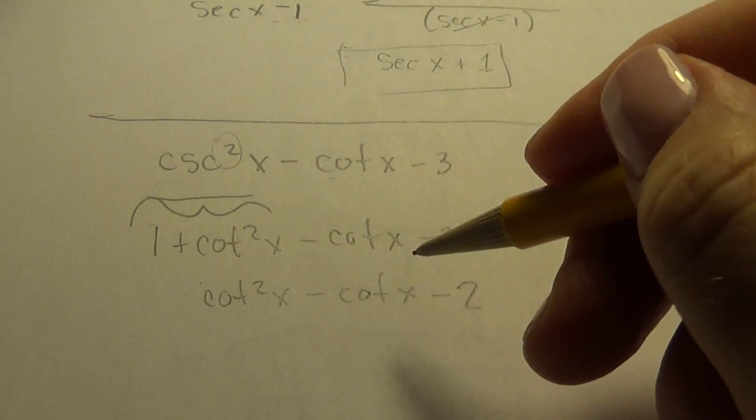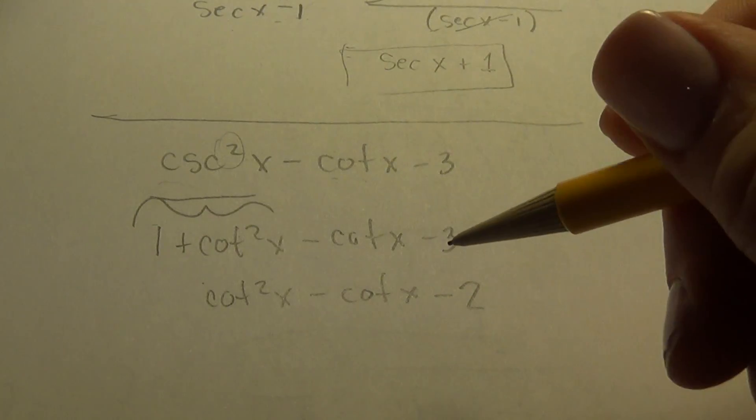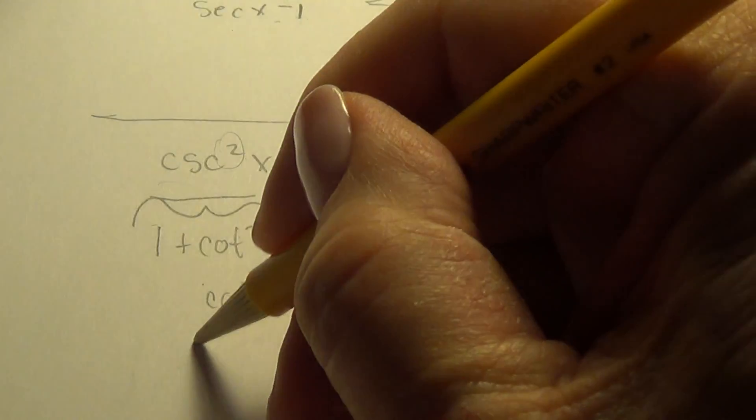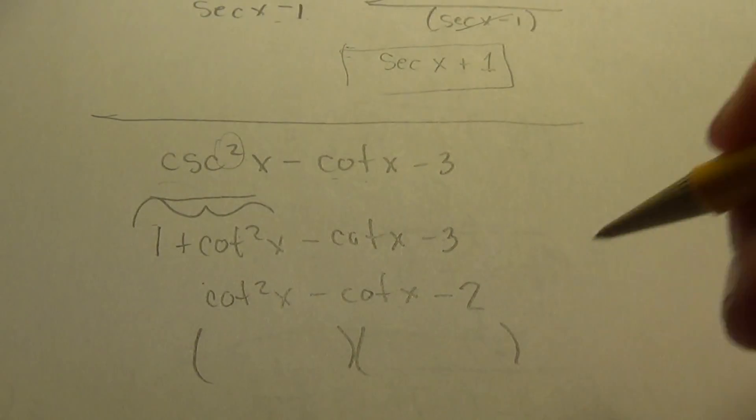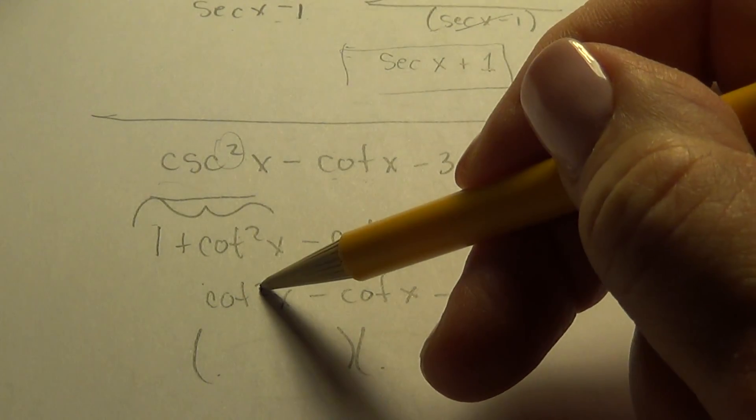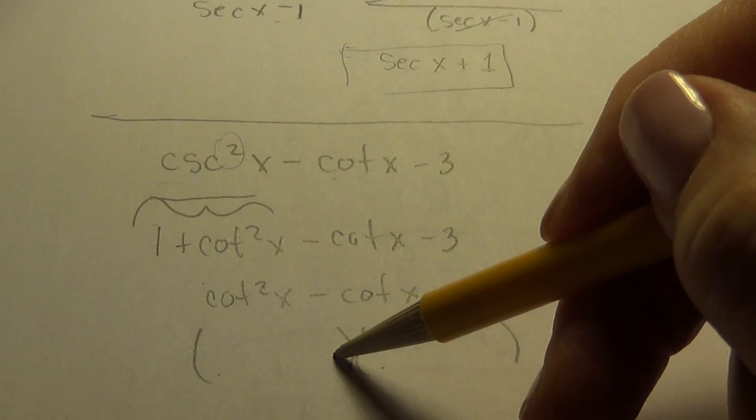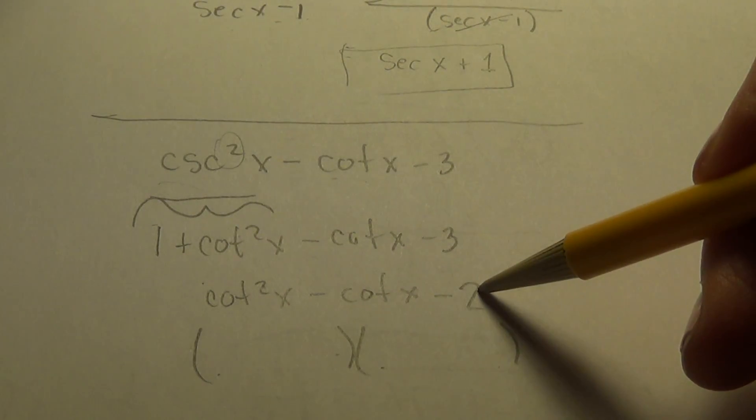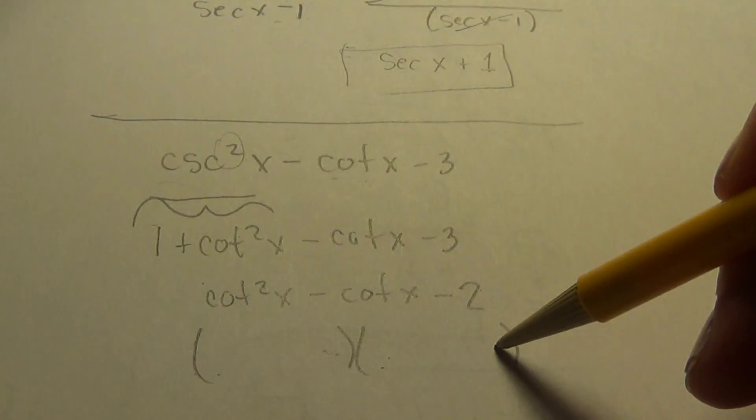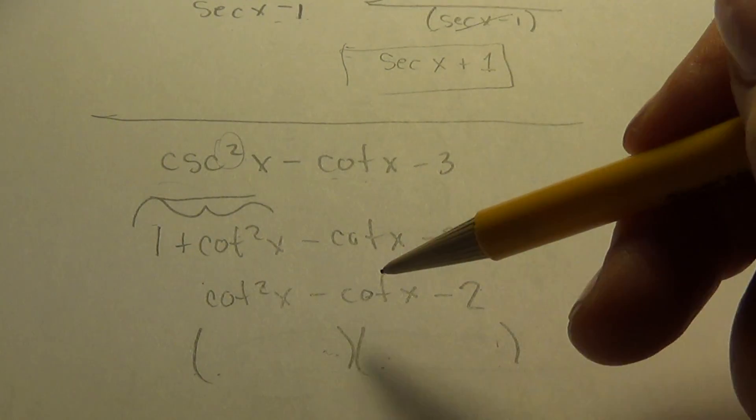And here's where I will need to factor it the other way, and this is not a difference of two squares. This is called factoring. It's just called factoring. And it's when we find the first term times the first term will give us that. And the last term times the last term will give us this. And the sum of the inner and outer products have to give us that. Like foil.